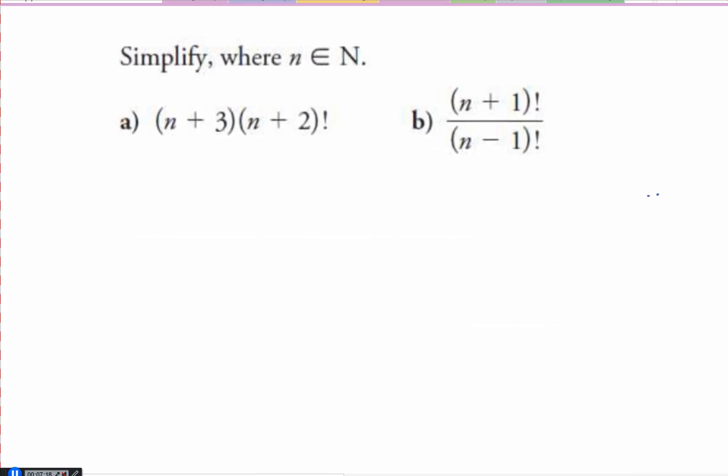So simplify. You're going to remember some of your rules in your math from grade 10 and 11. Here it says n plus 3 times n plus 2 factorial. So the factorial is only referring to the second set of brackets. Not the whole thing. If they wanted it to be for the whole thing, they would have to have another set of brackets in there.